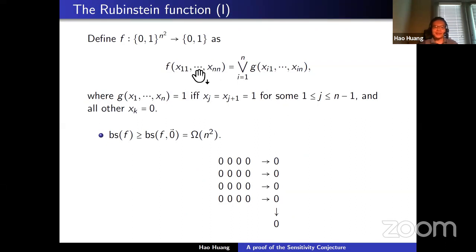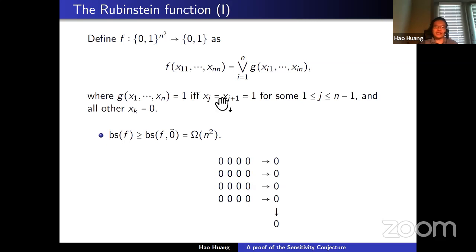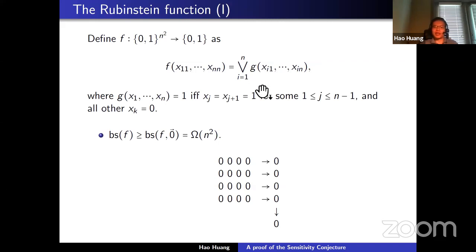Let me show a function where block sensitivity is strictly greater than sensitivity — the famous Rubinstein function. Define a Boolean function f in n-squared variables, arranged as an n-by-n grid with variables x_{ij}. For each row, define g which outputs 1 if and only if two consecutive coordinates equal 1 and the rest are 0. Then apply the AND function over the outputs of each row.